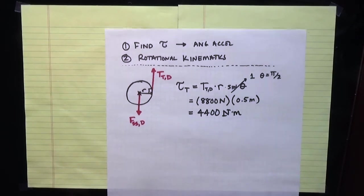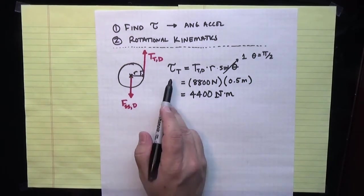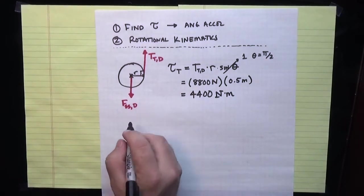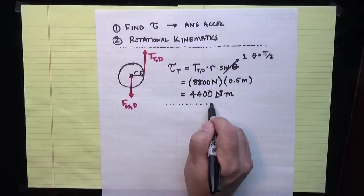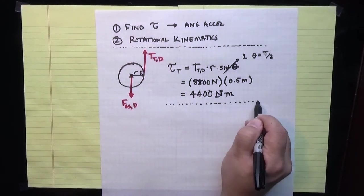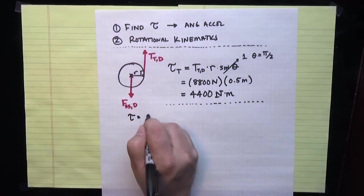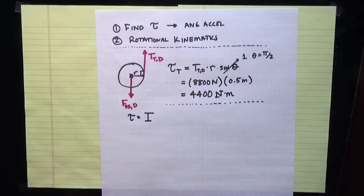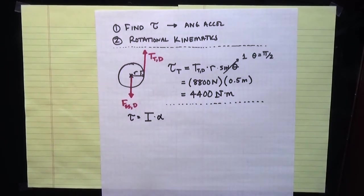Now, if I want to find the angular acceleration, then I have to think about the object that the torque is acting on, because torque is related to angular acceleration in terms of the properties of the object. In particular, torque is equal to the moment of inertia of the object experiencing the torque, times the angular acceleration alpha.